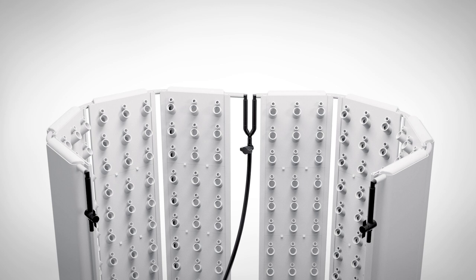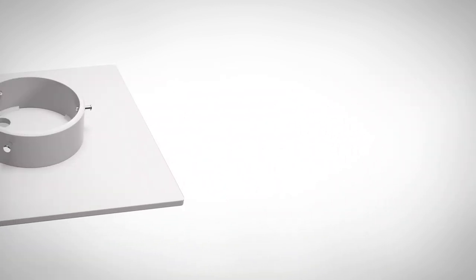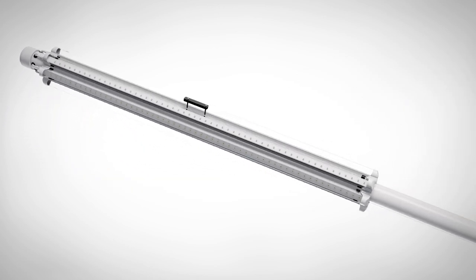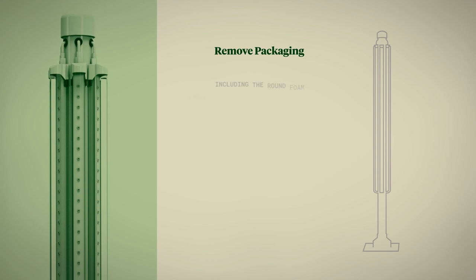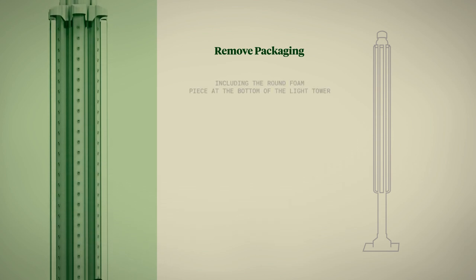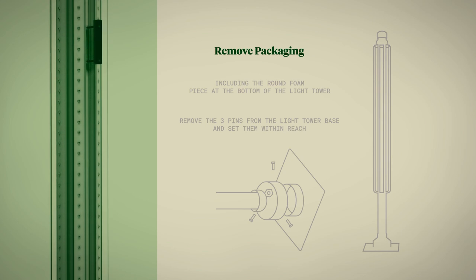Now it's time to add the light tower. Locate the light tower base and three pins and set them aside. Carefully lay the light tower down with the handle facing upwards. Remove the packaging including the round foam piece at the bottom of the light tower. Then remove the three pins from the light tower base and set them within reach.